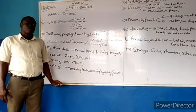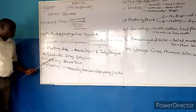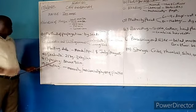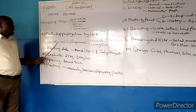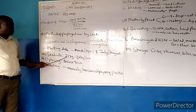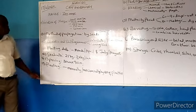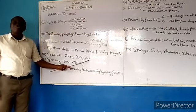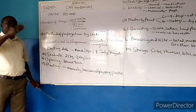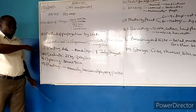Seed rate refers to the quantity of seed needed to plant one hectare of farmland. For maize, a bag of dry viable maize of about 25 to 30 kg can be used to plant one hectare. One hectare equals 10,000 square meters — a piece of land 100 meters long and 100 meters wide.